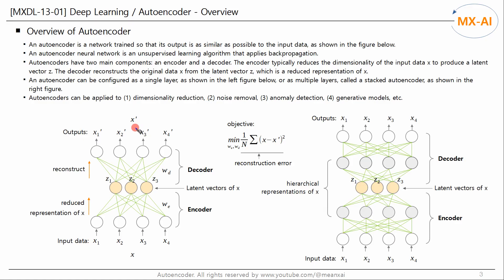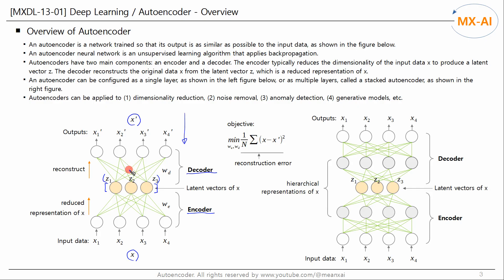An autoencoder is a network trained so that its output is as similar as possible to the input data. An autoencoder neural network is an unsupervised learning algorithm that applies backpropagation. Autoencoders have two main components: an encoder and a decoder. The encoder typically reduces the dimensionality of the input data X to produce a latent vector Z. Conversely, the decoder reconstructs the original data X from the latent vector Z, which is a reduced representation of X. The goal of an autoencoder is to minimize the difference between the original input and the reconstructed output, a measure known as the reconstruction error.